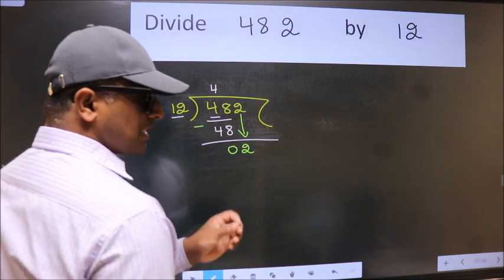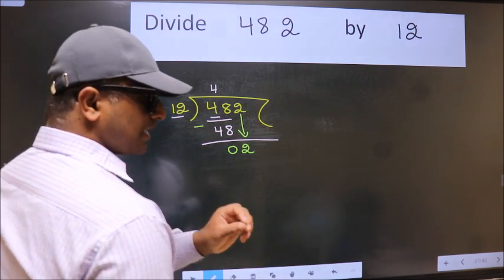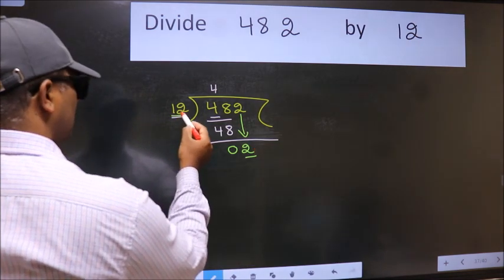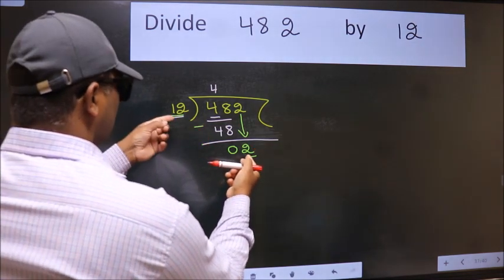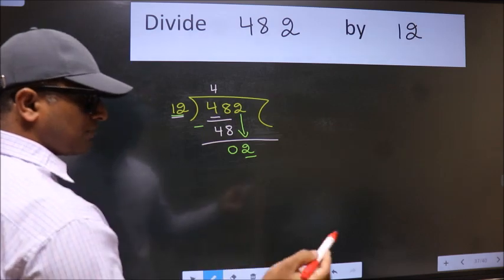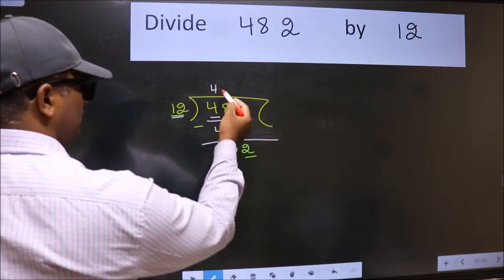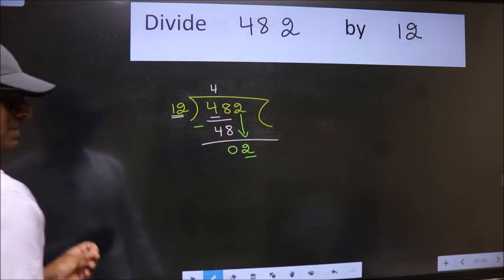After this step, the mistake happens. And the mistake is this. Here we have 2 and here 12. 2 is smaller than 12. So what many do is they directly put dot, take 0, which is wrong.